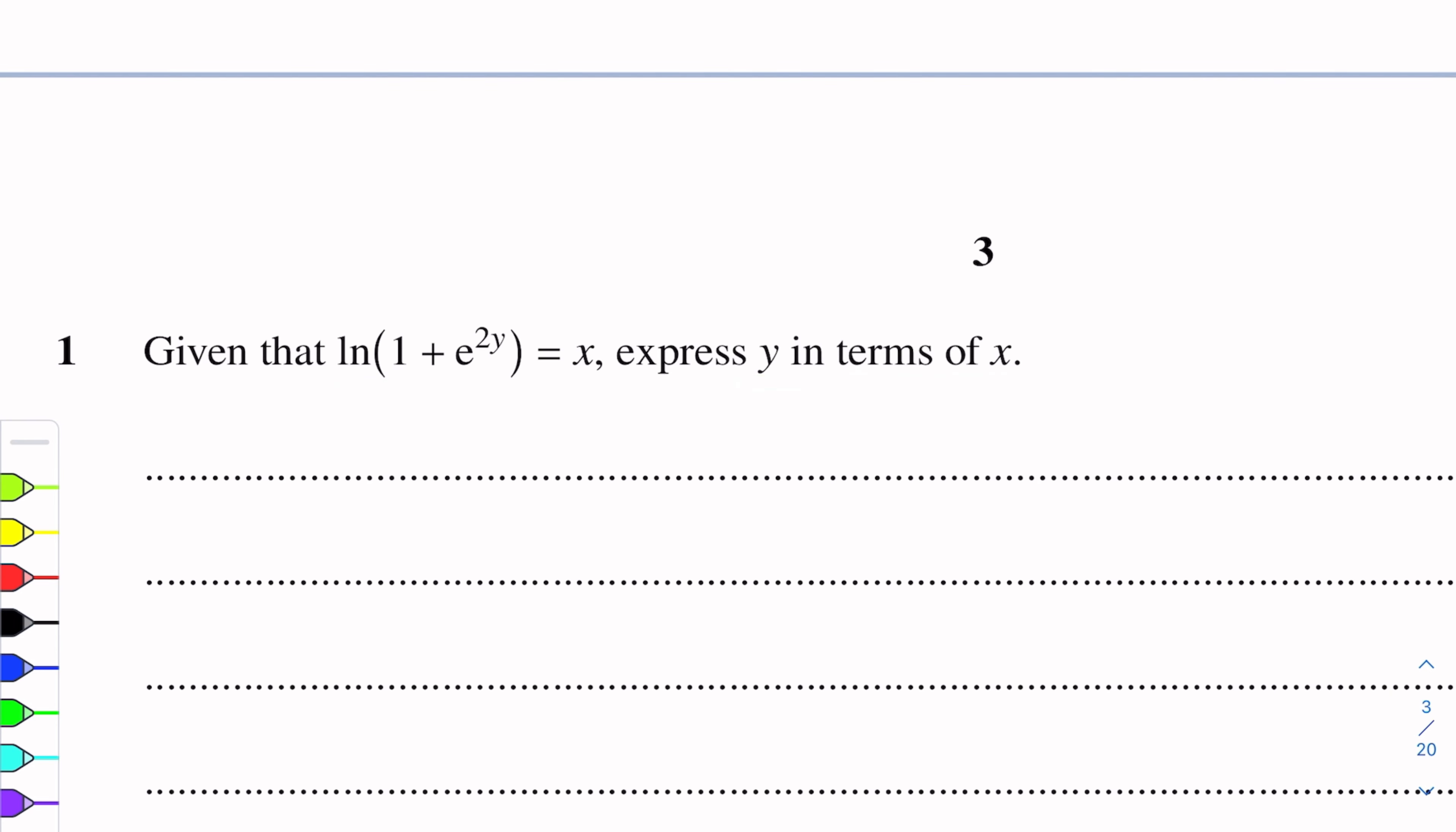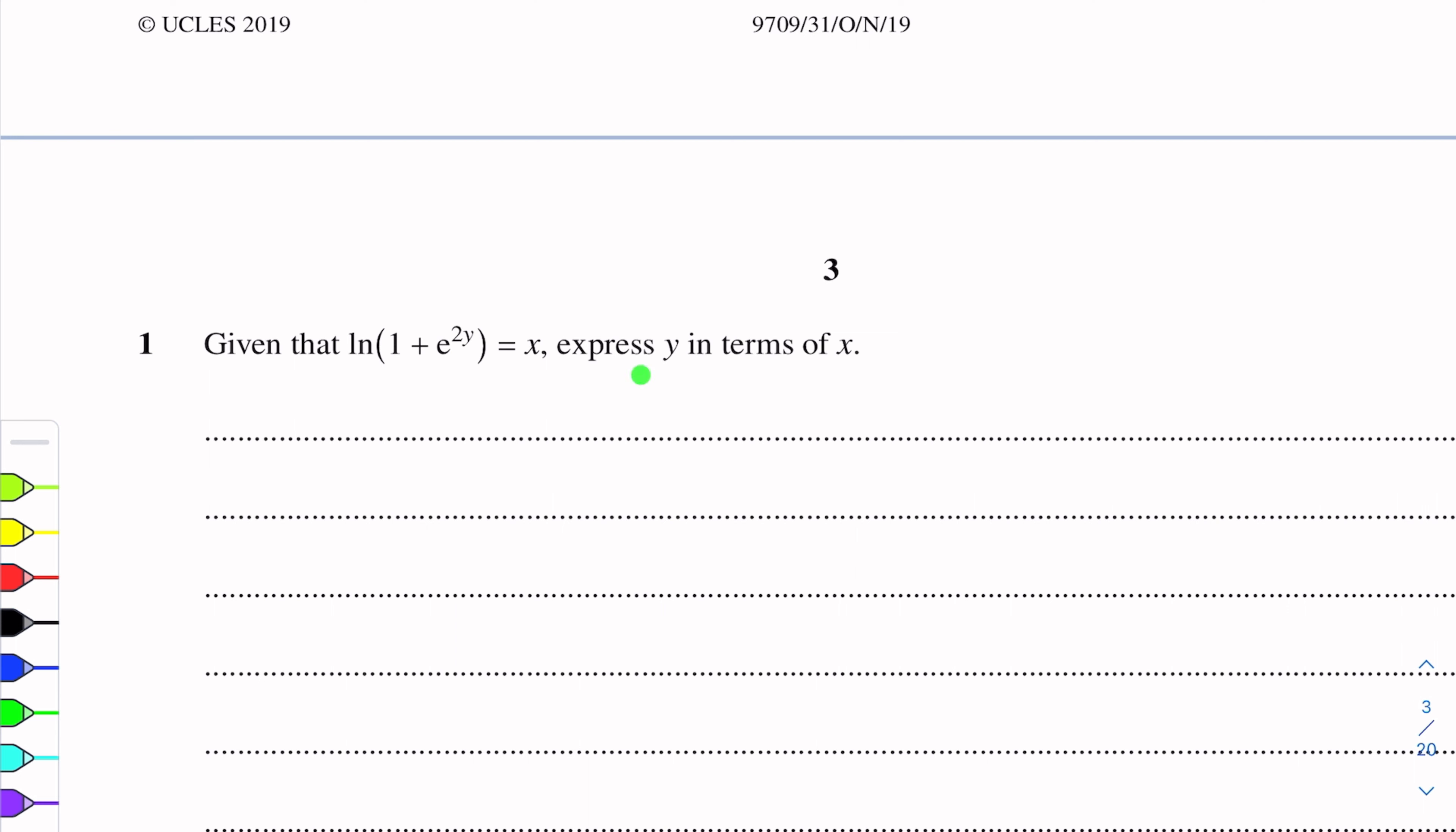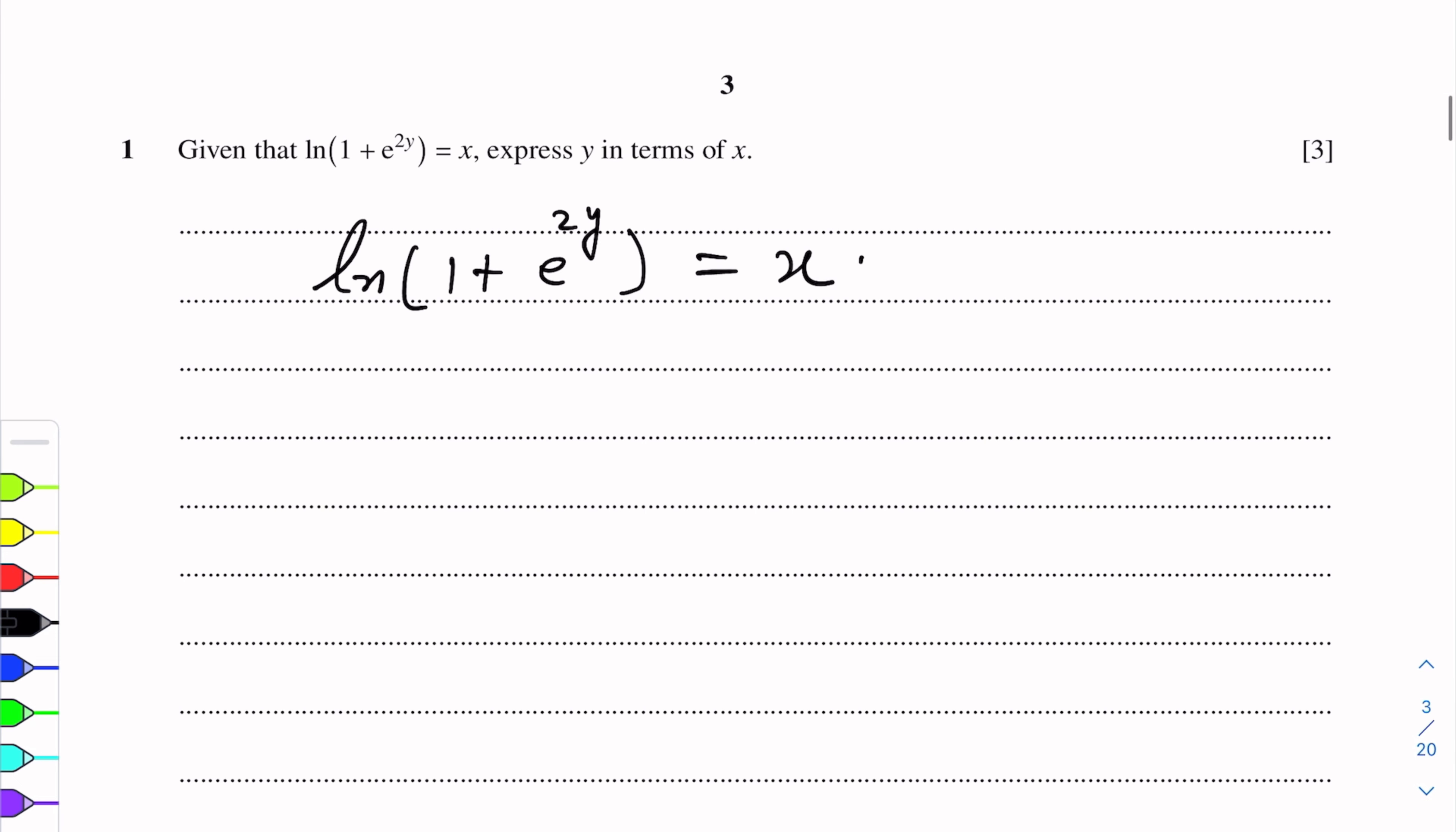In this question there is exponential function, e^(2y) and log. We remove log from log(1 + e^(2y)) = x by removing this log, we take the anti-log process.